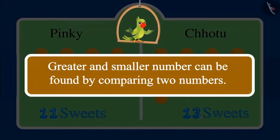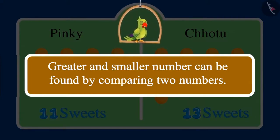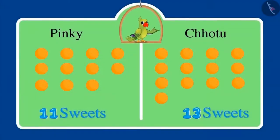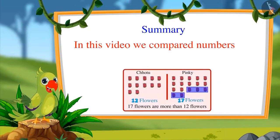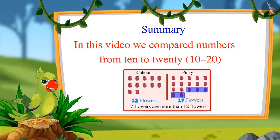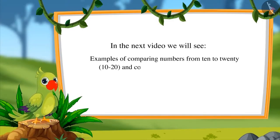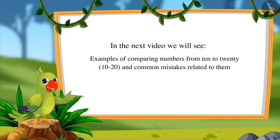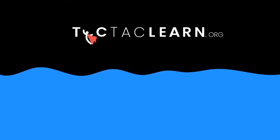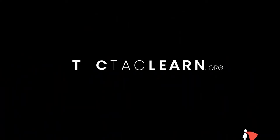Yes Pinky, come on, let's distribute all the sweets to our neighbors. So children, in these examples you saw how Pinky and Chotu compared two numbers and found out which number is greater. You can also compare the number of objects around you. So children, that is all for today. In this video we compared numbers from 10 to 20. In the next video, we will see some more examples of comparing these numbers and some common mistakes related to them. Till then, bye friends!